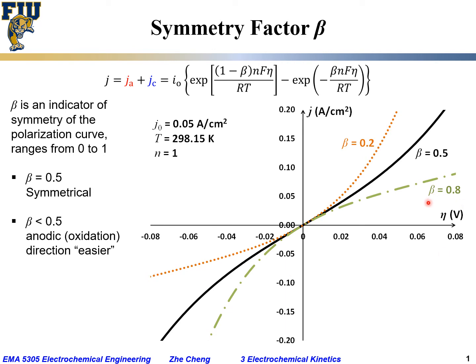On the other hand, when beta equals 0.8, when beta is greater than 0.5, following this green dash dot line for beta equals 0.8, which is greater than 0.5...